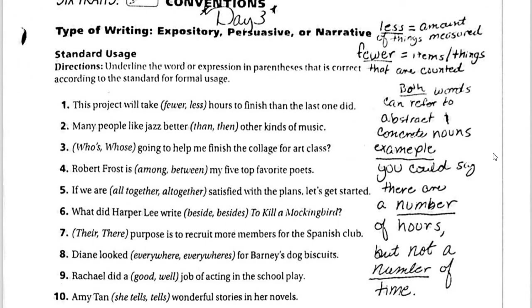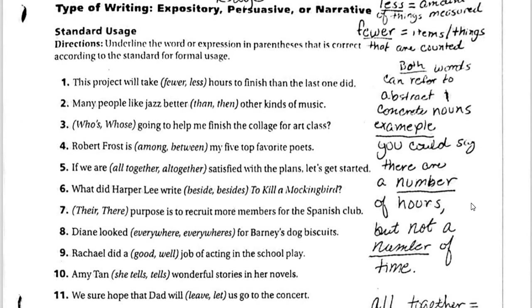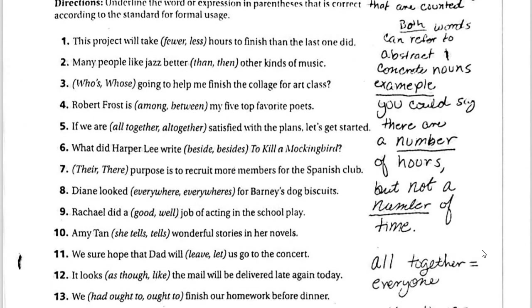Then we've got the difference between less and fewer. Less refers to an amount of things that are measured, and fewer pertains to items or things that are counted. So there's a difference between measuring and counting. Both words can refer to abstract and concrete nouns. For example, you could say there are a number of hours, but not a number of time — because time is something measured, not counted.